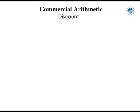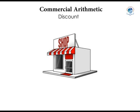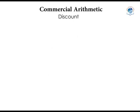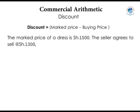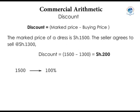Next: discount. When you walk into a shop, all items have their prices marked or told to you by the attendant. Prices may be fixed or negotiable. In negotiable cases, the buyer requests the seller to reduce the price — that reduction is called a discount. Discount = marked price − buying price. For example, if a dress is marked 1,500 shillings and the seller agrees you pay 1,300 shillings, the discount is 200 shillings, which as a percentage is (200/1,500) × 100% = 13.33%.